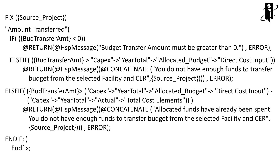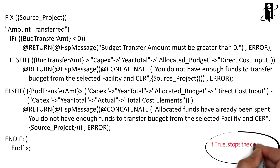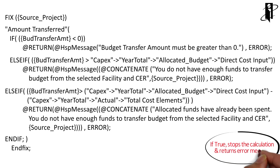What the end user sees is a little bit different. Remember, if any of these conditions take place and a message is returned to the end user, it's recorded in the application log and the calculation stops — so it doesn't actually perform the transfer, which is the next set of logic not displayed on the screen.